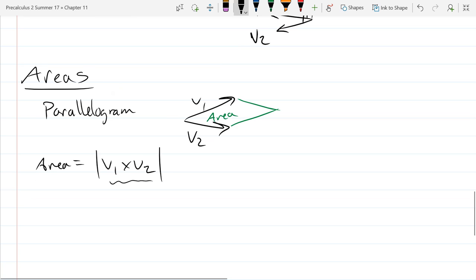So that is how to get the area of a parallelogram. And remember when you do a cross product, you're going to get a vector, cross product two vectors is another vector, and then take the magnitude.